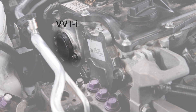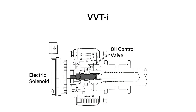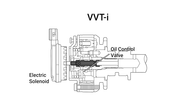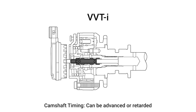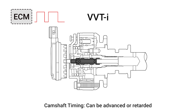VVTI is used on the exhaust camshaft and is a conventional electro-hydraulic adjustment system. The cam timing can be advanced or retarded. Oil flow is controlled by the engine control module by activating the cam timing solenoid to move the oil control valve, advancing or retarding cam timing.